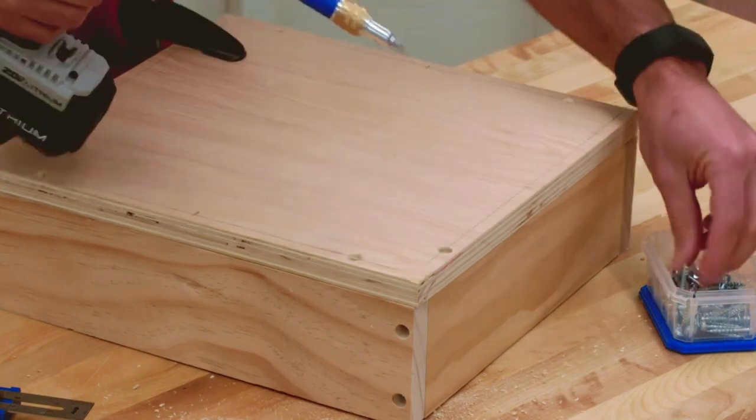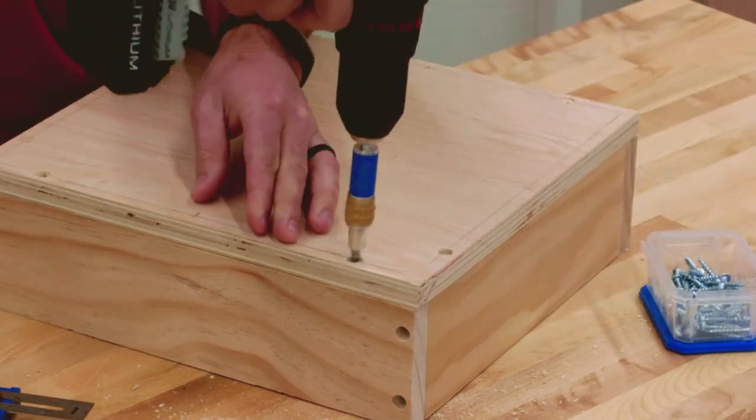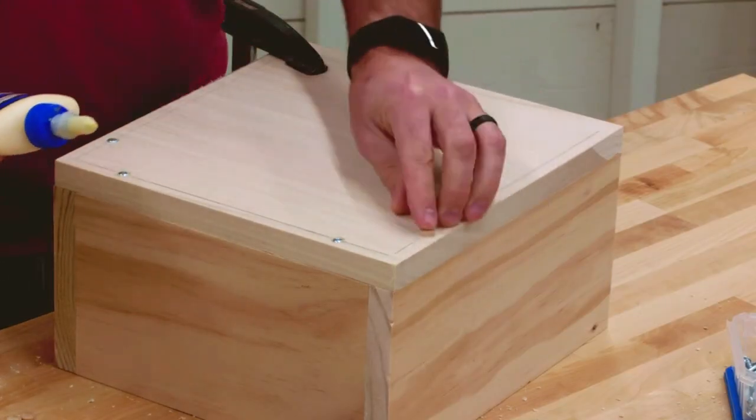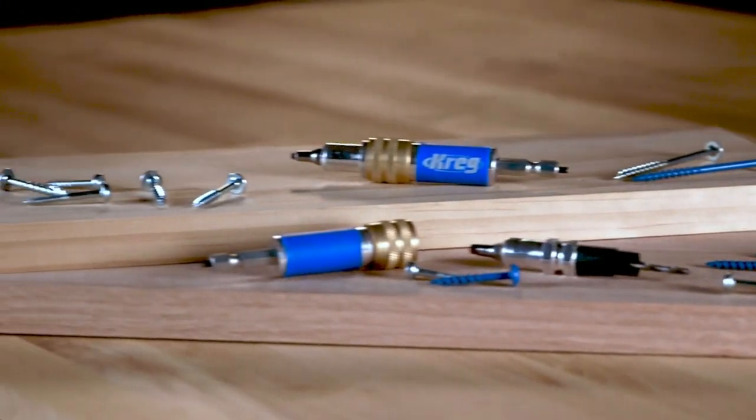It features a double-ended insert in a quick release housing. On one end there's a drill bit that's sized to drill a perfect pilot hole for a Craig screw, plus a cutter that drills a flat bottom recess called a counter bore that the screw head fits into.